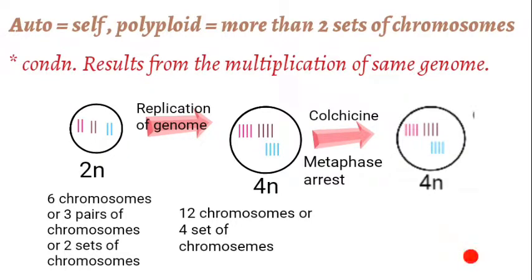Let's say an organism is diploid in nature and its cells undergo mitosis. During mitosis, a single parental cell divides into two daughter cells — so a diploid cell gives rise to two diploid daughter cells. Before mitosis, replication of genetic material takes place, and after replication the cell becomes tetraploid, meaning the genetic material of the cell has doubled.